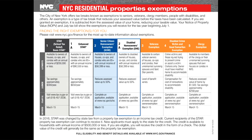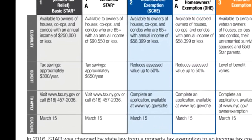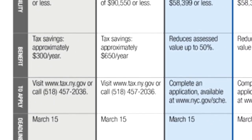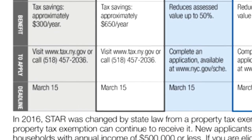Star and Enhanced Star cannot be combined, nor can the senior and disabled exemptions. But our earlier example had three exemptions: Enhanced Star, the senior exemption, and the veteran's exemption, because you can combine Enhanced Star with the senior exemption and the final three. The chart lists the basic eligibility, benefit amount, application location, and the deadlines. The deadline is March 15th annually for the application to be submitted.